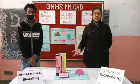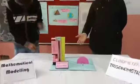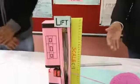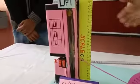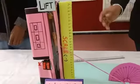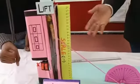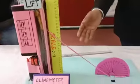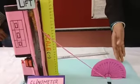Let's see how this works. Aditya, please switch on the remote. You can see the lift goes up — the angle of elevation increases here. This proves that the height of an object increases with the angle of elevation.